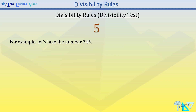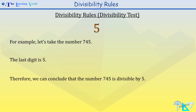For example, let's take the number 745. The last digit is 5, so therefore we can conclude that the number 745 is divisible by 5.